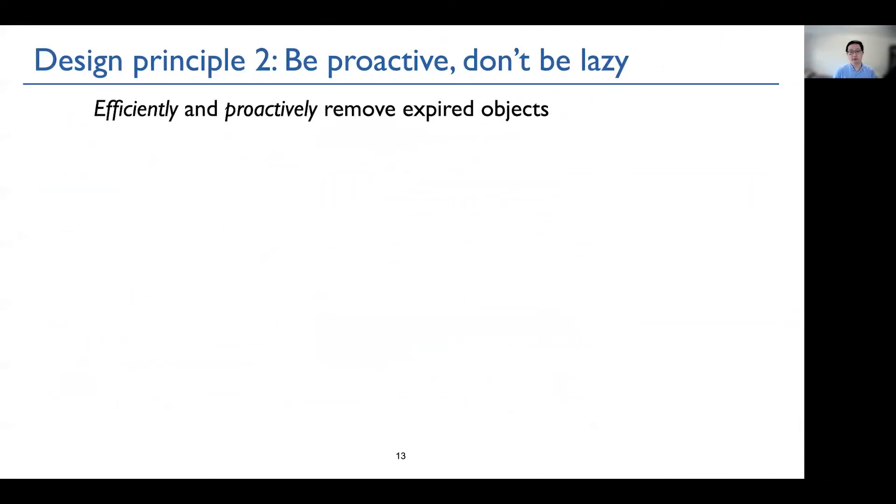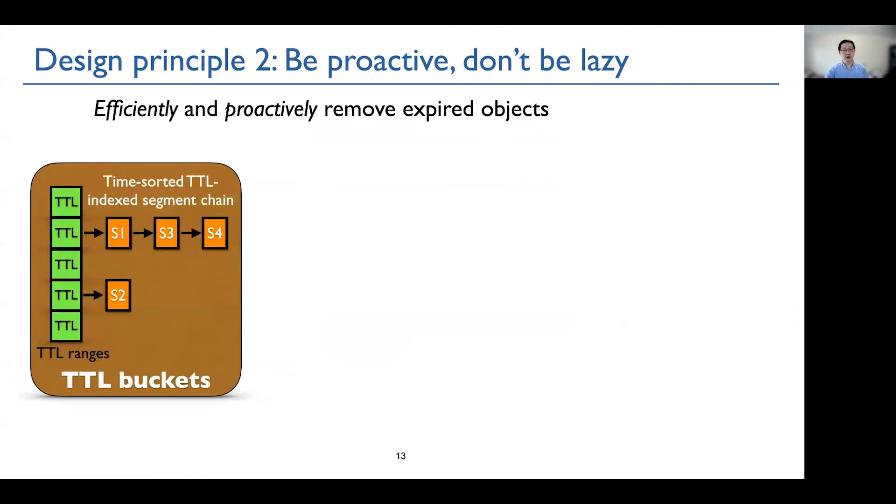The second design principle is be proactive. Don't be lazy. So Segcache wants to efficiently and proactively remove expired objects. Recall that Segcache has these TTL buckets, where each TTL links out a time-sorted TTL indexed segment chain. And objects in one segment share the same metadata. So they share creation time and TTL, and they expire at the same time.